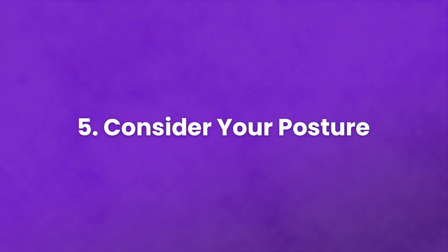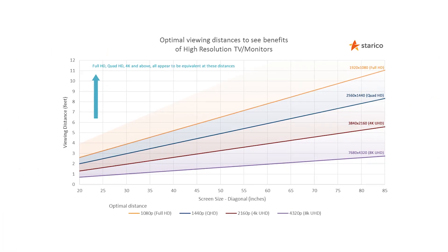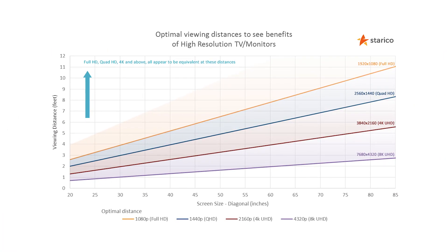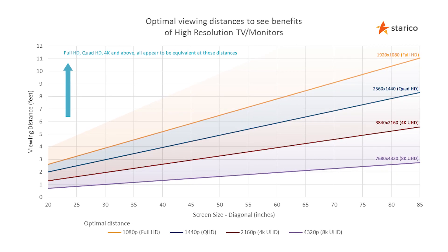Number five: consider your posture. Where you are in relation to your screen plays a pretty big role in eyestrain too. You want to be looking at your monitor front on at eye level — you shouldn't have to look up or down to see it. Not only is that bad for your posture, but most screens have a slightly different look from various angles: colors shift a little, glare hits it differently, and so on.